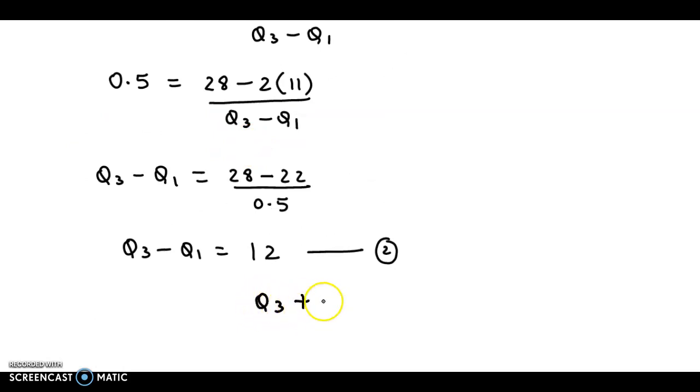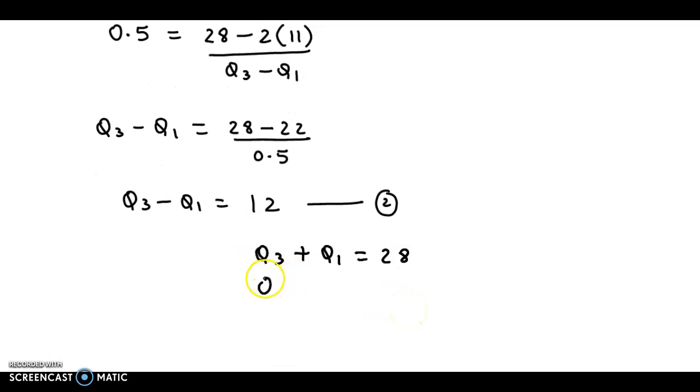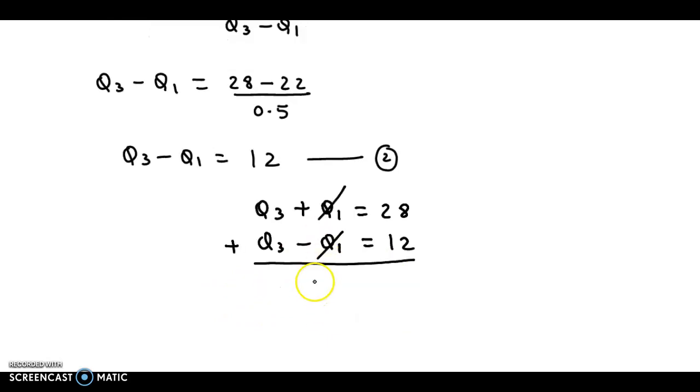So first equation is Q3 plus Q1 is 28. Next equation is Q3 minus Q1 is equal to 12. Let us add the two equations. When we add them, Q1 gets cancelled, so we have 2 times Q3 is equal to 40, so Q3 value is 20. So the upper quartile is 20.